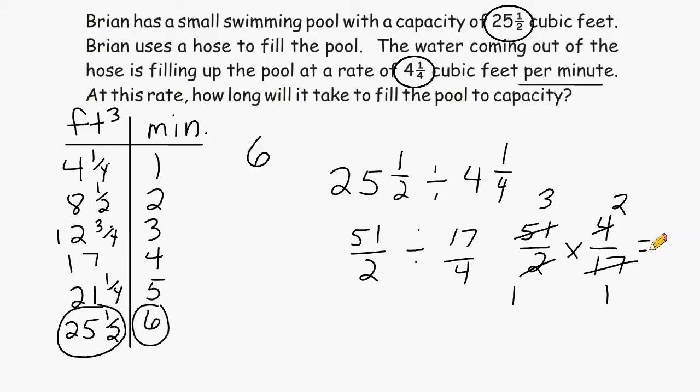So for the remaining numerators, we have a 3 and a 2, which gives us a product of 6. And both denominators are 1, so that's going to yield a product of 1. And we can simplify 6 over 1, and that would give us 6. So we have figured out that it would take 6 minutes to fill this pool to capacity.